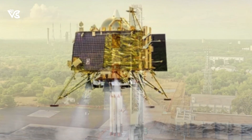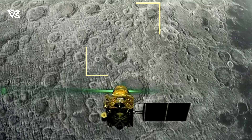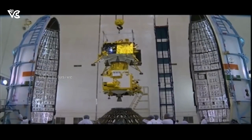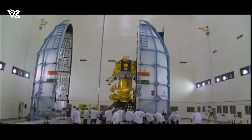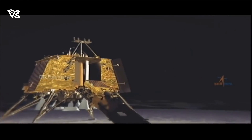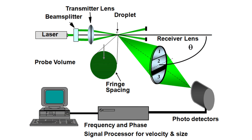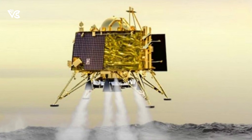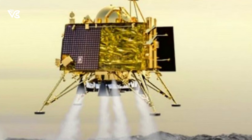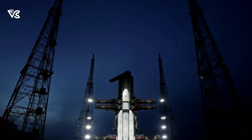ISRO learned from these failures and made necessary changes to ensure Chandrayaan-3's success. The landing area was increased from 500 by 500 meters to 4 by 4 kilometers. Changes include increasing the lander's attitude rate to 25 degrees per second and enabling instantaneous thrust control during all phases. The thruster response time was reduced for quicker reactions. Instruments like the Laser Doppler Velocimeter were added to measure velocity in all directions. The lander's legs were also improved to handle landing speeds of up to 3 meters per second, along with many software tweaks.